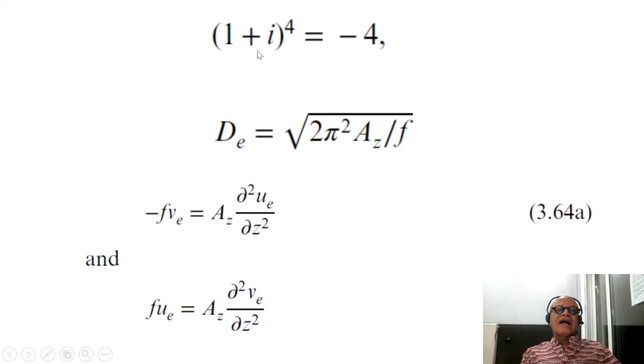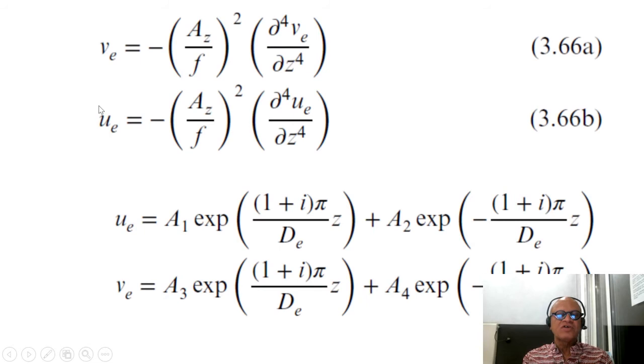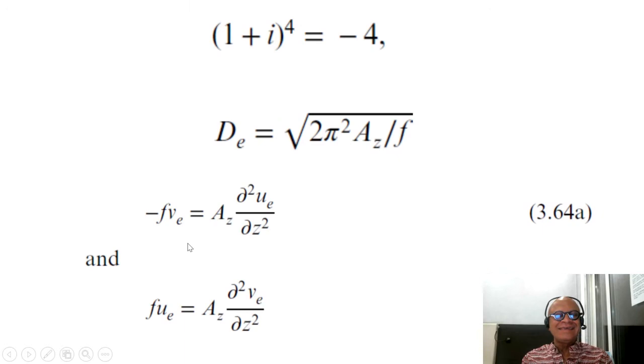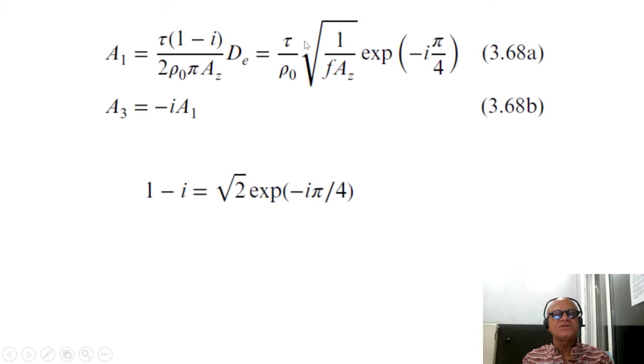So here 1 plus i to the fourth is minus 4 and there is an Ekman depth. You can think of it as friction layer which is equal to square root of 2π² eddy viscosity divided by f which comes out of these equations where at d_e wind stress goes to 0. So u_e and v_e goes to 0 and using again these equations and the equations we just looked at, we can write the expression for the Ekman layer depth in terms of the wind stress, the eddy viscosity and this exponential term.